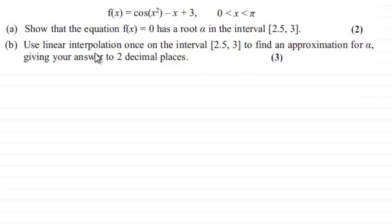And then go on to use linear interpolation once on the interval [2.5, 3] to find an approximation for α, giving your answer to two decimal places, and that's for three marks.